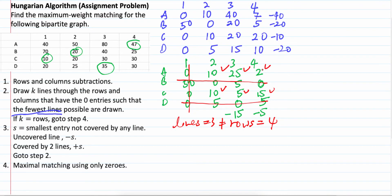Now, what we need to do is step number 3. From the uncovered entries we find the smallest one: 10, 25, 2, 10, 5, and 15. The smallest one is 2. So, our s is equal to 2. We draw again our matrix 1, 2, 3, 4.